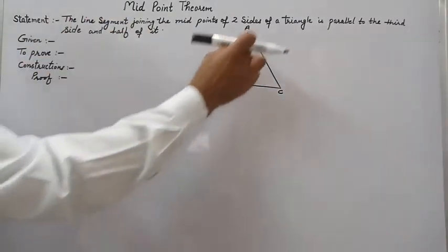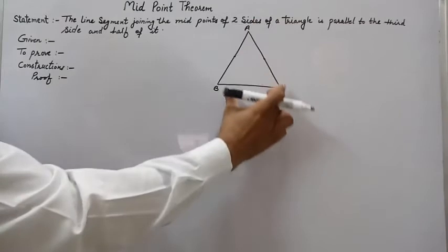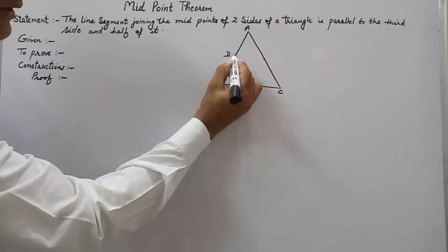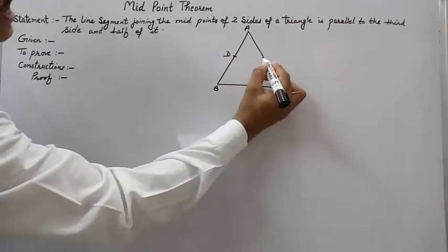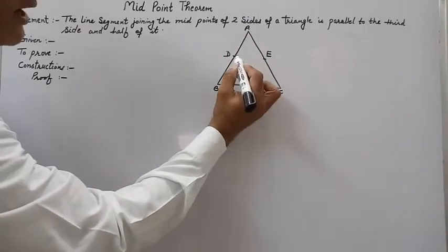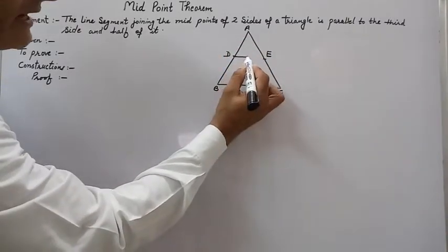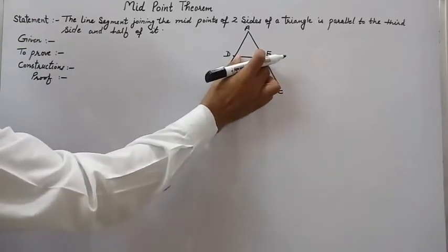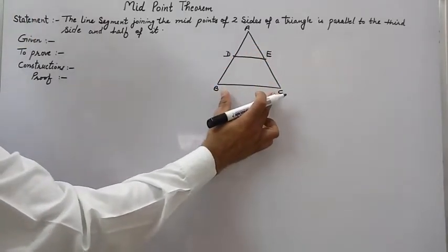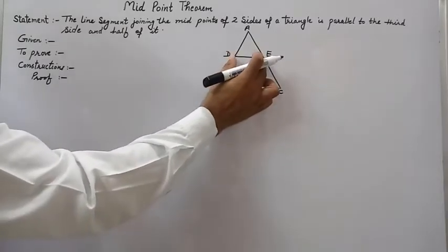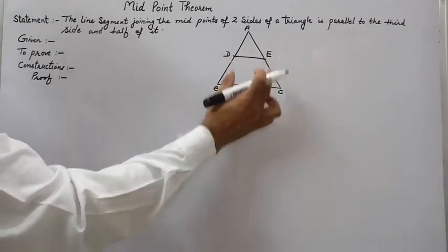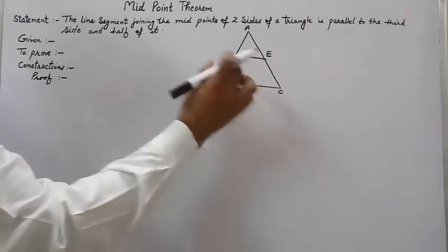Suppose we are given a triangle ABC. If D is the midpoint of AB and E is the midpoint of AC, then if we join line segment DE, this line segment will be parallel to the third side BC. We need to prove that DE is parallel to BC and DE is half of BC.